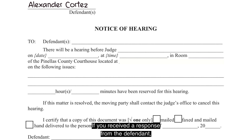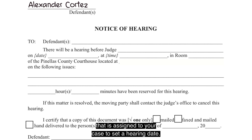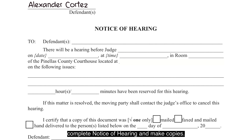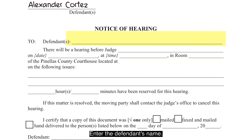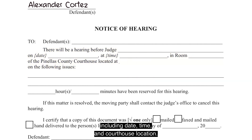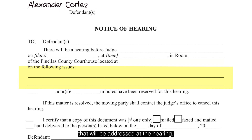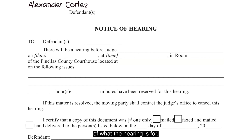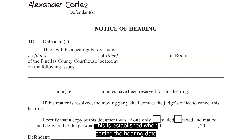If you received a response from the defendant, your case will need to be set for a hearing. It is your responsibility to contact the judicial assistant for the judge assigned to your case to set a hearing date. Once you have set your hearing, complete this form and make copies. File the original and provide a copy for the defendants. Enter the defendant's name, then enter the hearing information provided by the judge's office, including date, time, and courthouse location. Use this space to enter the motions or issues that will be addressed at the hearing, ensuring the defendant is properly notified. Enter the estimated time for the hearing, which is established when setting the hearing date with the judge's office.